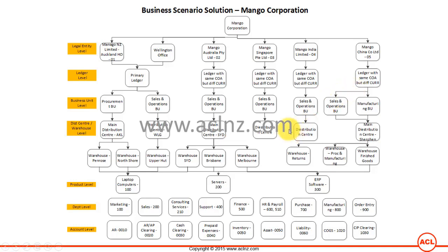Operating units let you segregate transactions. You can create specific roles and responsibilities that have access to one operating unit's transactions or multiple operating units' transactions. This is handled through a setup called Multi-Org Access Control (MOAC), which requires a security profile to be defined indicating which operating units it has access to. That security profile is then assigned to a user, defining their access to multiple operating units.